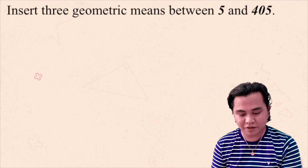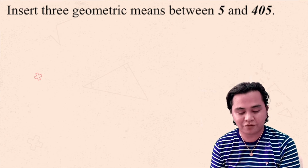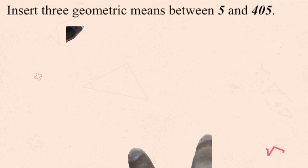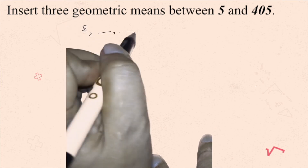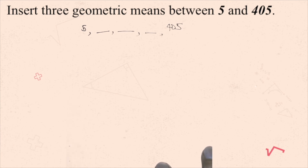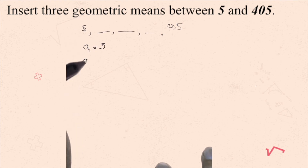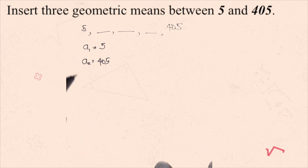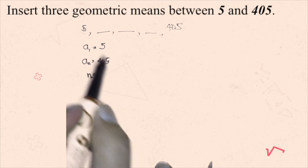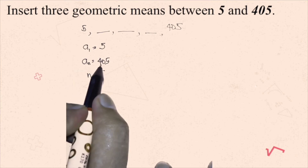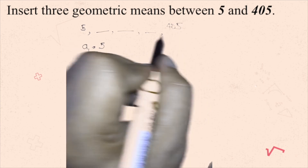Third example: insert 3 geometric means between 5 and 405. This is the illustration of the problem. We know a sub 1 is 5, and a sub n is the last term, which is 405. Counting positions — 1st, 2nd, 3rd, 4th, 5th — 405 happens to be the fifth term, so n is 5.